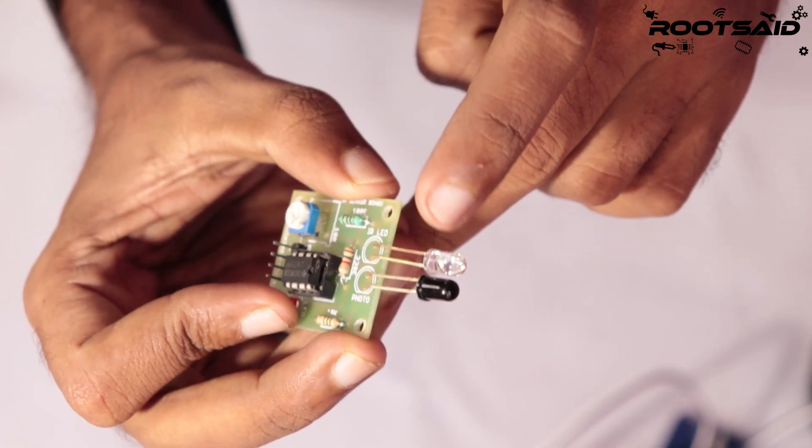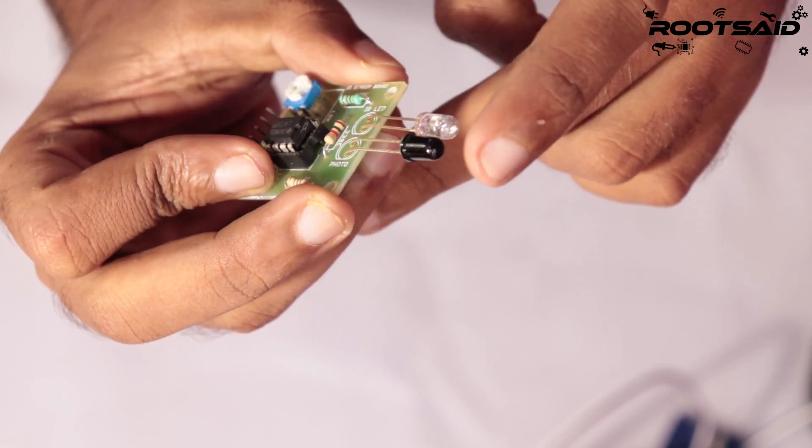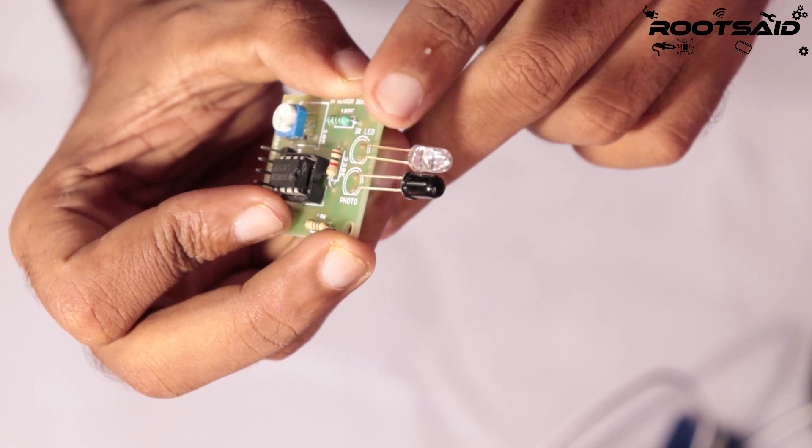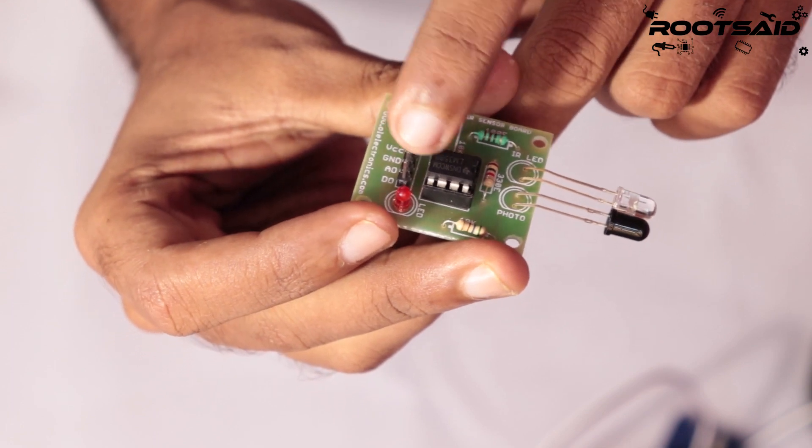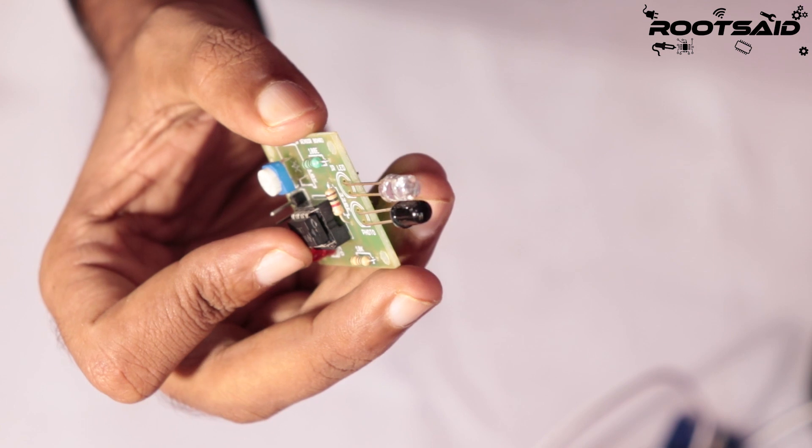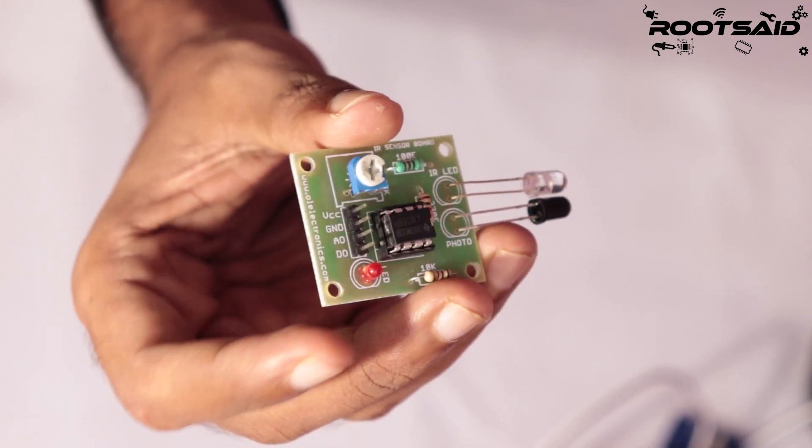The Vout pin will give us an output voltage of 5V when the IR light is reflected back to the IR detector. In some IR sensors like this one, there will be analog output which will give you a continuous voltage between 0 and 5V. You should connect the analog output of the sensor to the analog input pin of Arduino. This will be really useful when you want to detect a color between black and white, like different shades of gray.